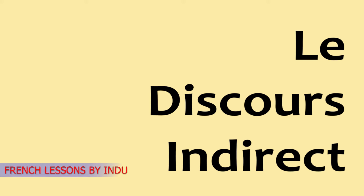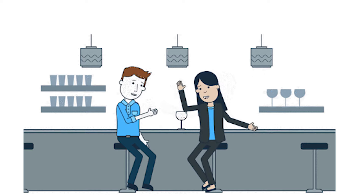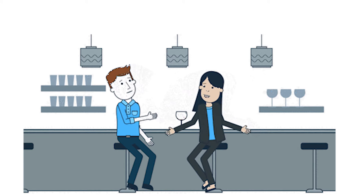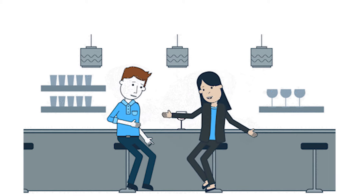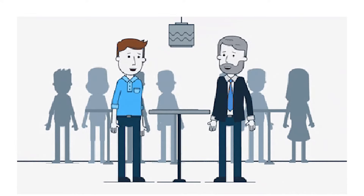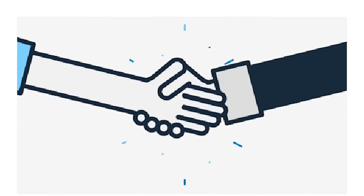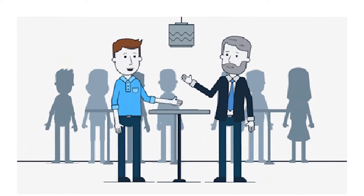Welcome to your French class. In this class we'll understand le discours indirect. There are two ways in which we can talk about what someone has said: either we can quote the actual words spoken by the person, or we can talk of what was said without repeating the exact words.